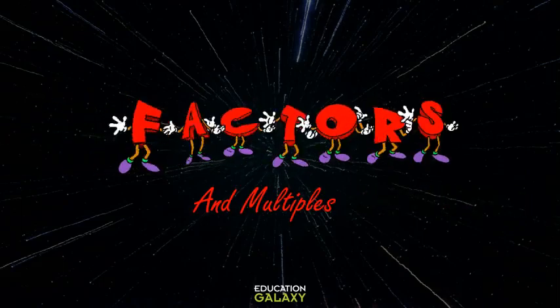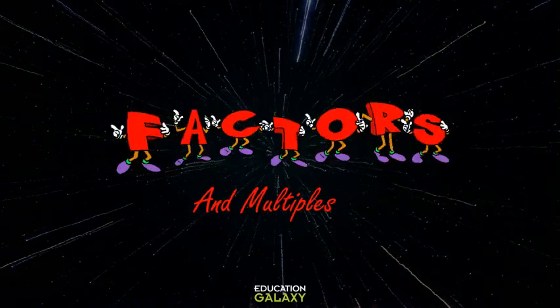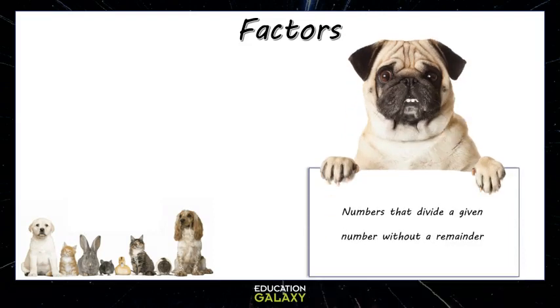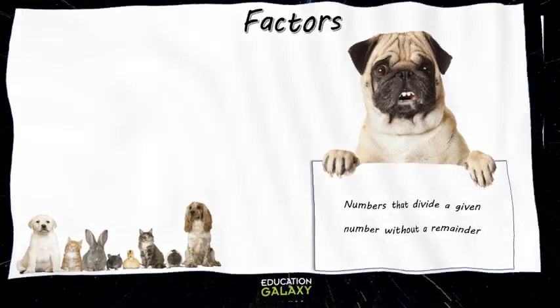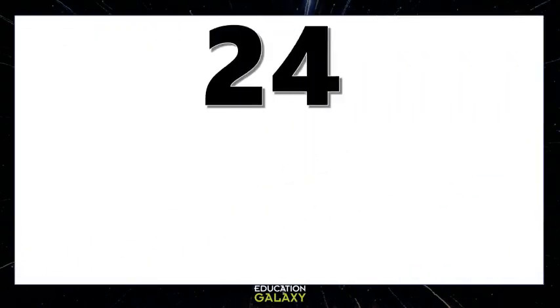Factors and multiples. Factors are numbers that divide a given number without a remainder. For example, let's find the factors of 24.